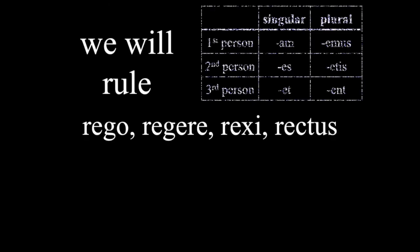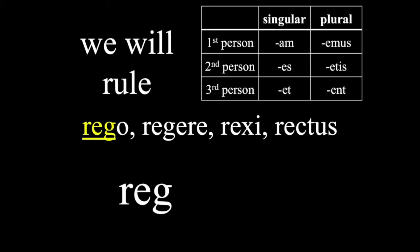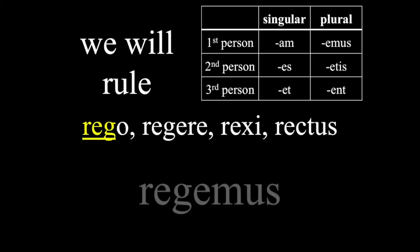All right, now let's try to form a few verbs in the future tense. Let's start with we will rule. The verb is rego regere, and here we have our future tense endings for third and fourth conjugation. We will drop the O from the first principal part to get the stem, then we will add the emus ending, since we're saying we will rule, and then we get regemus. Simple as that.